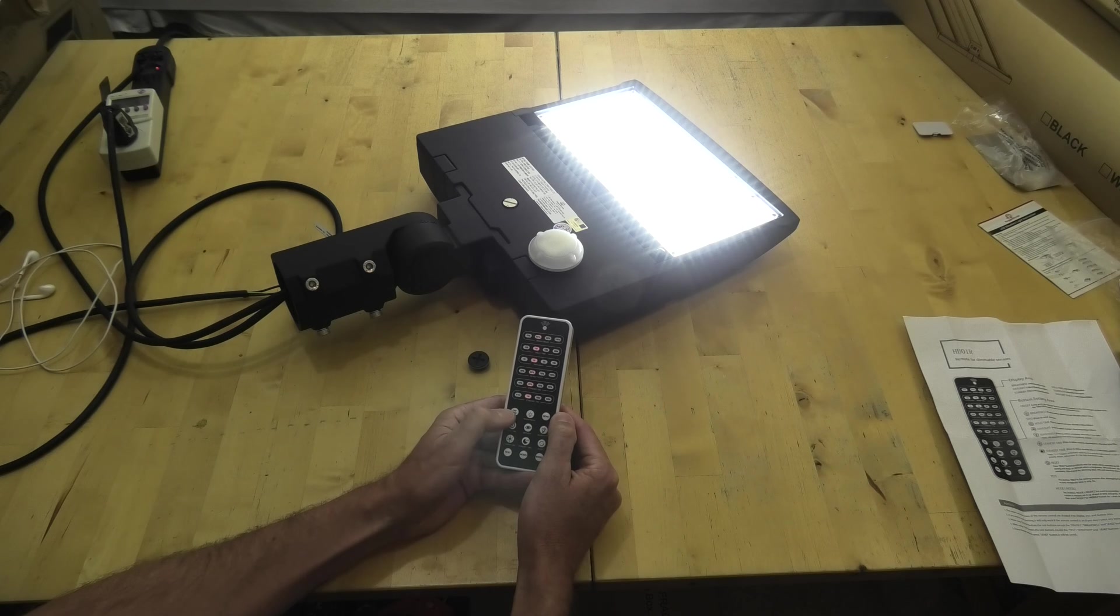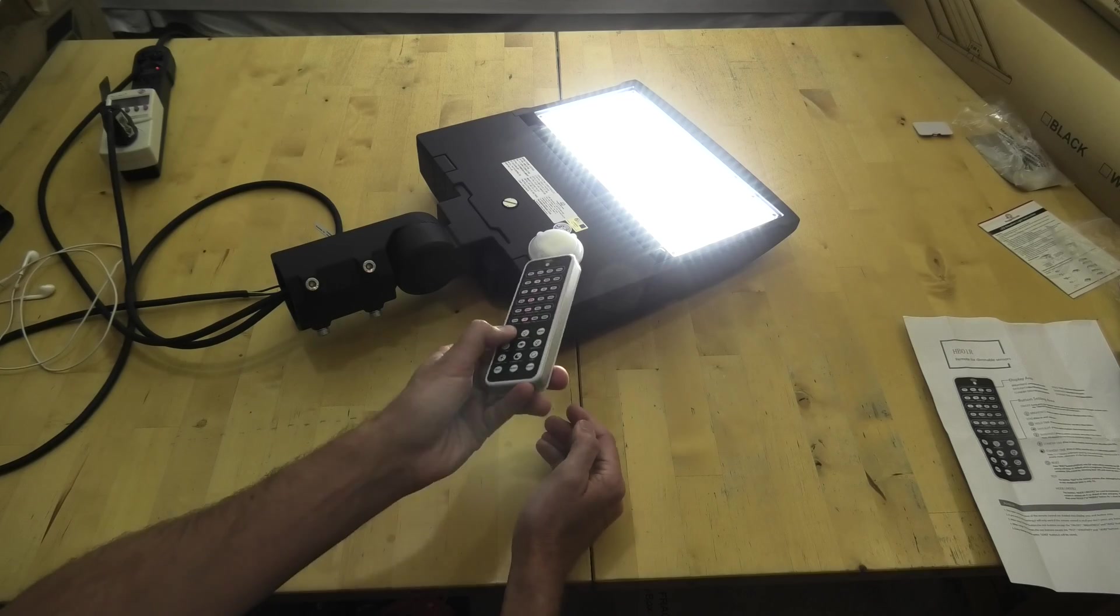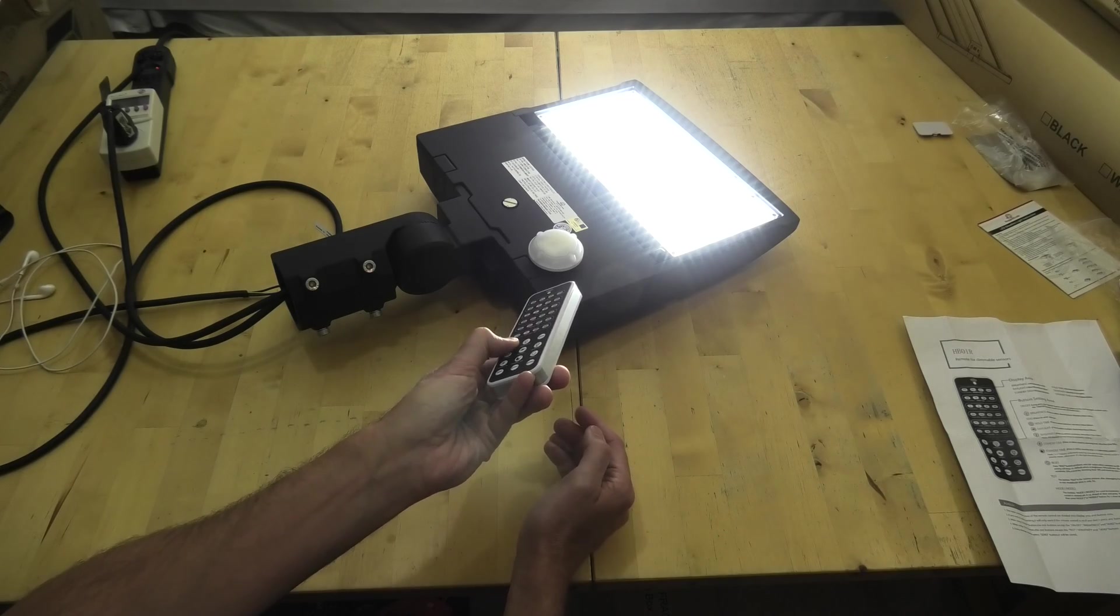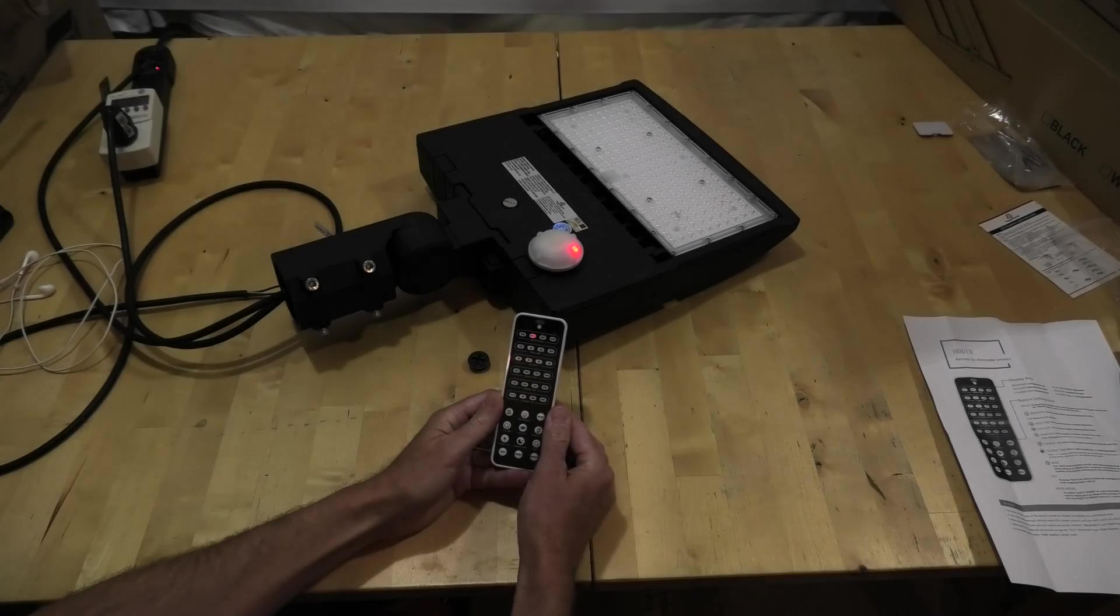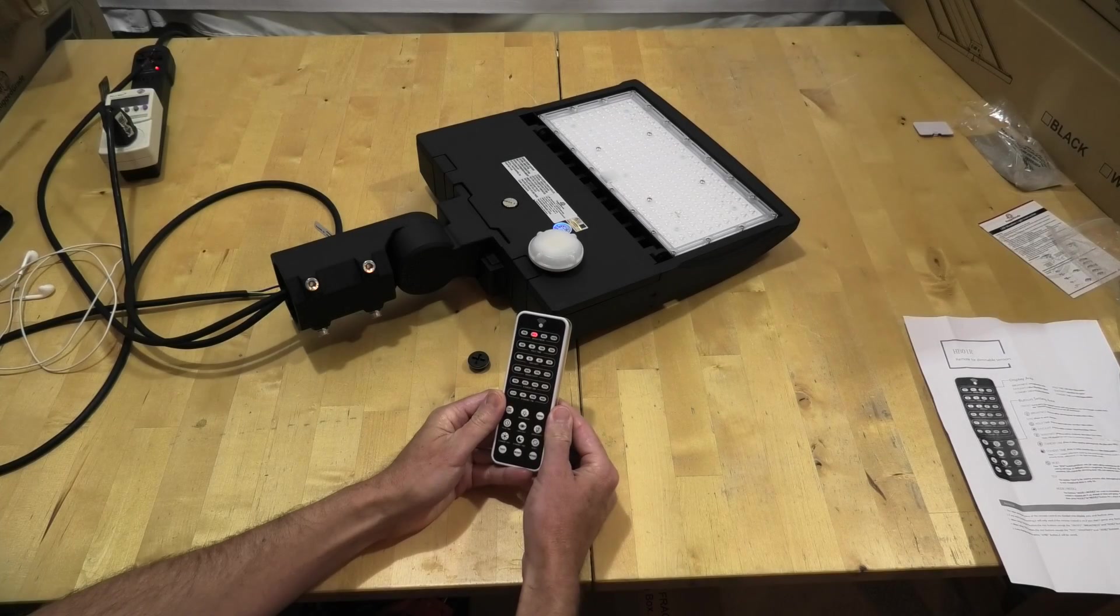One other feature to note is the on-off button is both the on-off for the remote as well as for the light. So again, holding this one down and the light will turn completely off, so it can be used as a remote light.